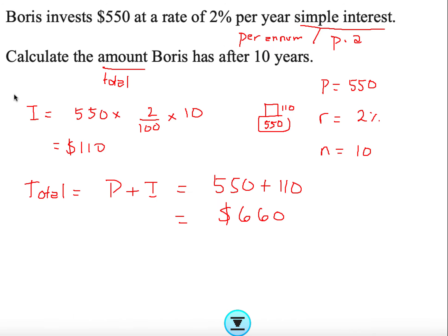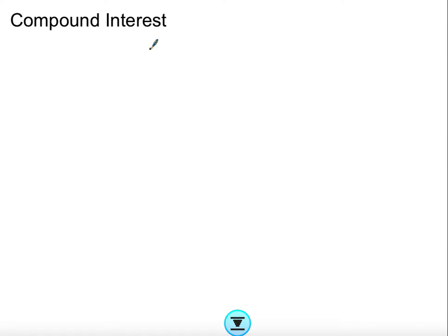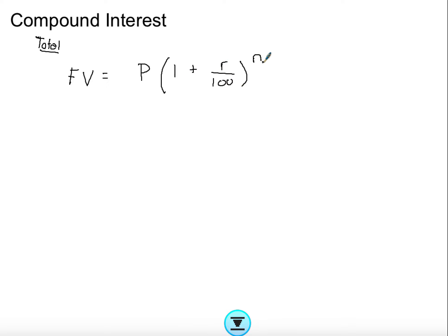For compound interest we automatically just have the total value formula. The total amount, which we call future value, equals the present value times (1 + r/100) to the power of n. This is compounded, meaning that starting from the present value, the interest starts small and then increases — it stacks up and grows ever more quickly, because of this power behavior.